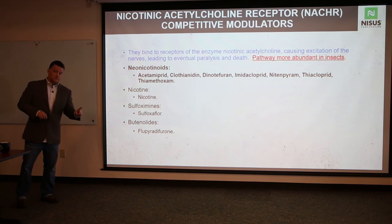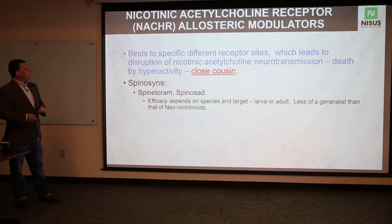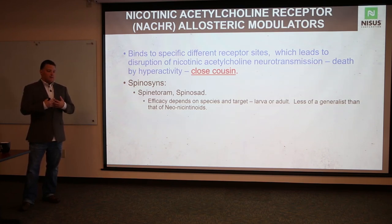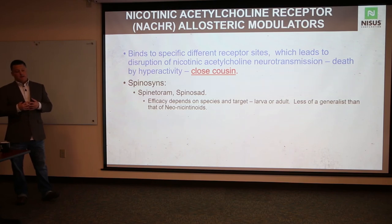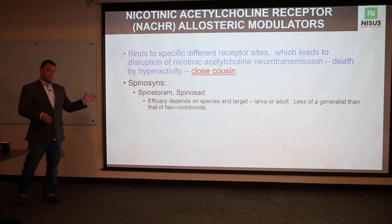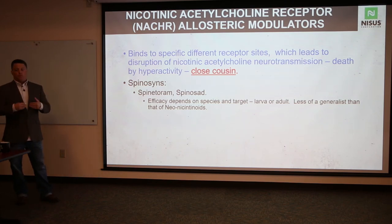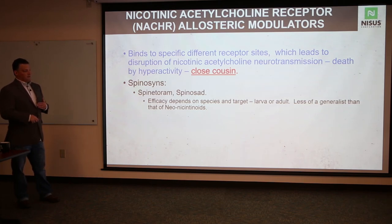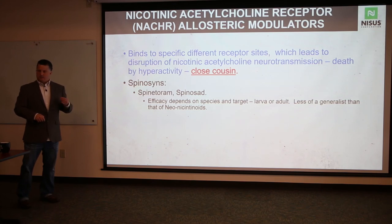Other neonicotinoids include acetamiprid and thiamethoxam — thiamethoxam is in some baits, acetamiprid is in some liquid insecticides, sometimes combined with synthetic pyrethroids. When you combine two families, you have two modes of action on the insect, which helps reduce resistance even more. The close cousins are spinosyns — derived from bacteria — usually found in baits because they generally work best when ingested. Spinosyns are very effective and found in ant baits, fire ant baits, and cricket baits.